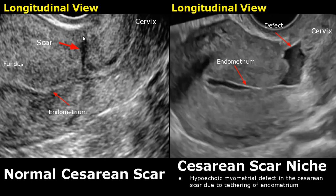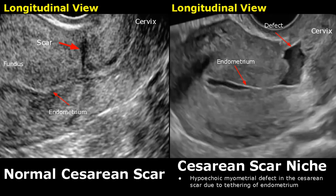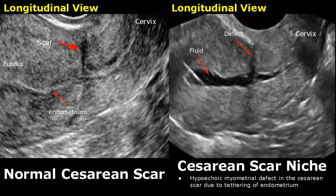In a caesarean scar niche, there will be a hypoechoic defect in the myometrium at the site of the caesarean scar due to tethering of endometrium. Blood has accumulated in this defect. The defect has various shapes. This is an irregular shaped defect. This defect has a linear shape.